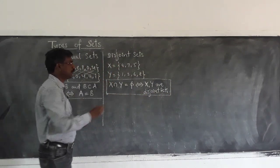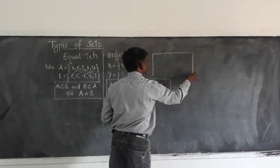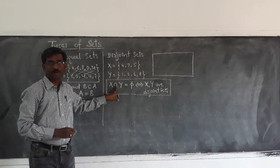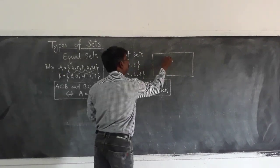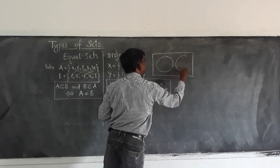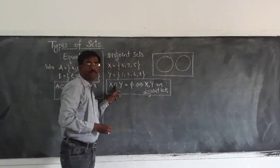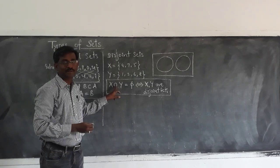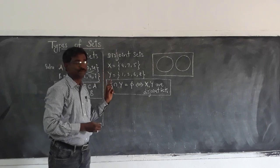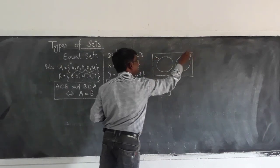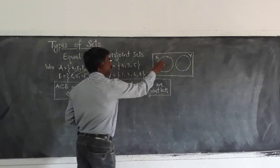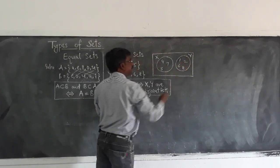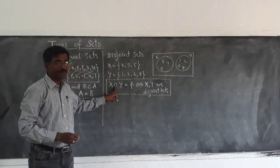Now let us observe the Venn diagram of these two disjoint sets. Because there is no common region, we draw the Venn diagrams without any overlapping. One circle represents X with elements 4, 7, 5, and the other represents Y with elements 1, 2, 6, 8. There is no common region.